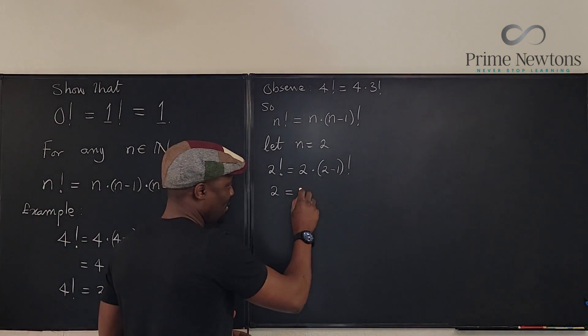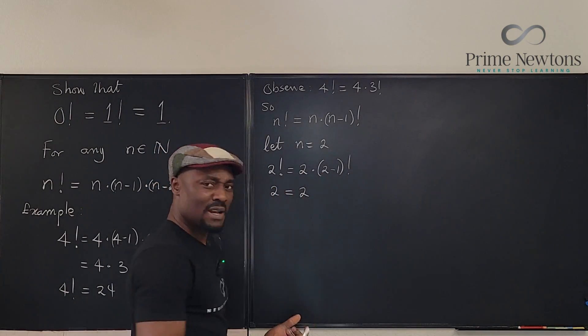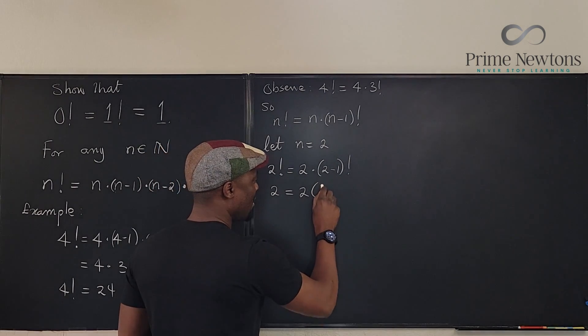What is here? This is 2. It's just 2. What is 2 minus 1? Oh it's 1. So this is our 1 factorial.